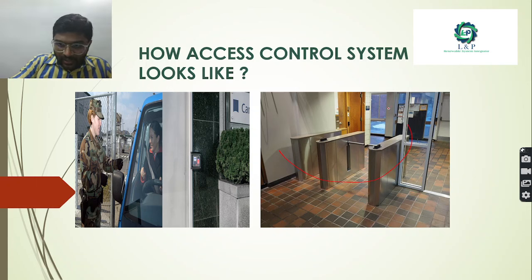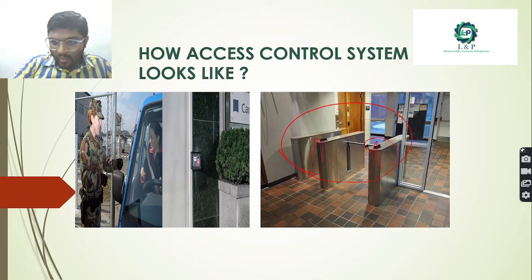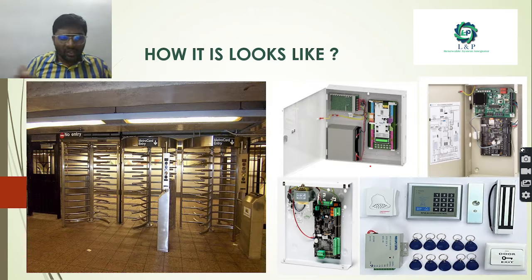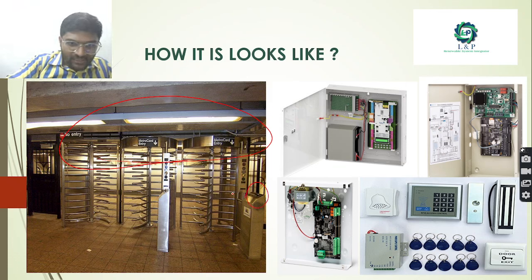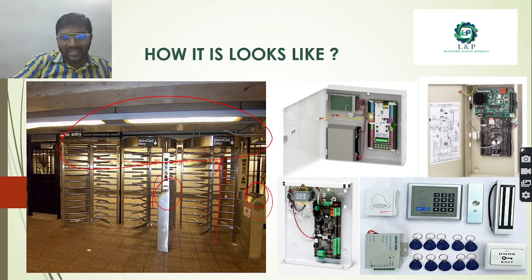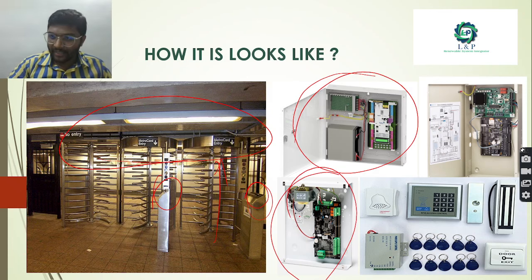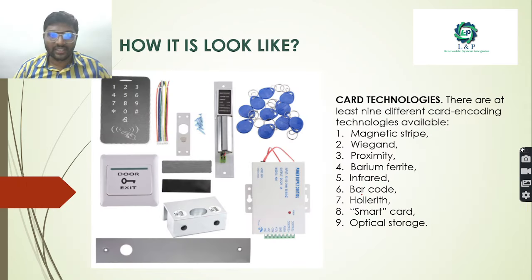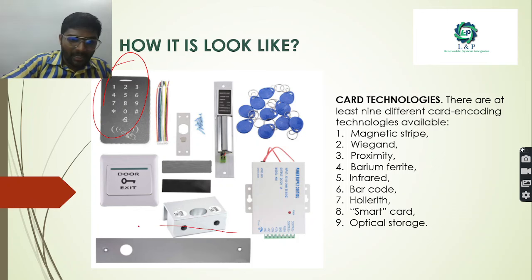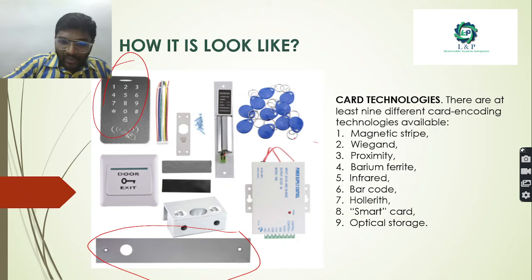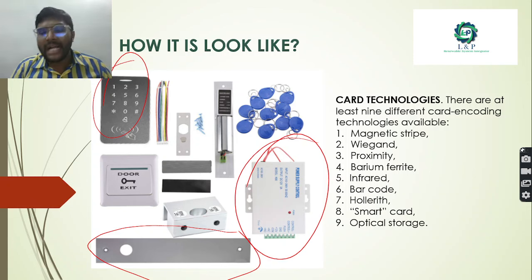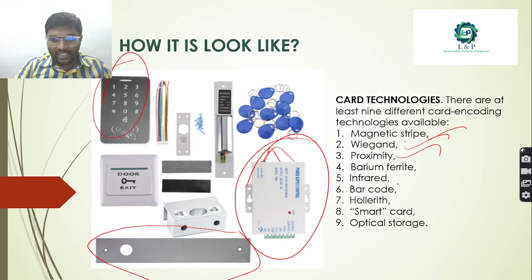This is how an access control system looks. We have a card reader here — when you scan a valid card, the barricade opens and you can enter. This is a simple example of a metro card reader. If you scan the card, you can pass through; otherwise, it is very difficult to cross these barricades. We also have access control panels and accessories including card readers, magnetic locks, and power supplies. Card reader technologies include magnetic strip, Wiegand, proximity, infrared, barcode, smart cards, and optical storage.